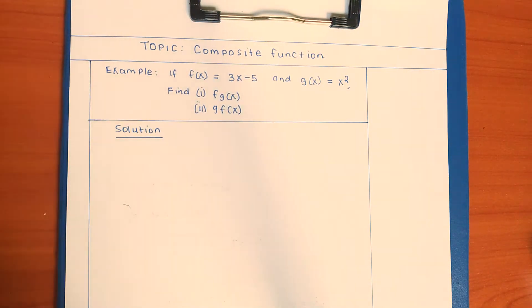Welcome my viewer. In this video, we shall look at how you can do calculations in composite functions. Example: if f(x) = 3x - 5 and g(x) = x², find (i) fg(x) and (ii) gf(x).